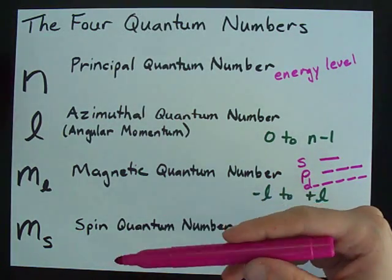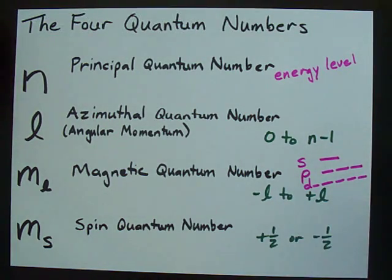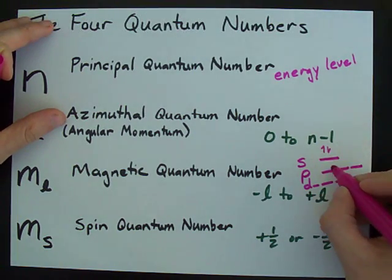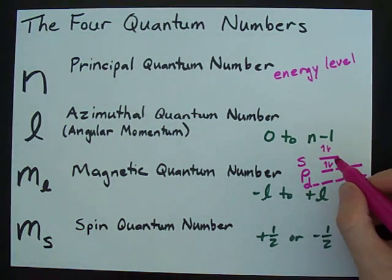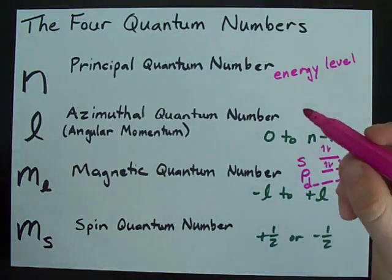There's also something called the spin quantum number, which is either plus a half or minus a half, and that really only represents the fact that you can put two electrons in each of these orbitals in the electron filling diagram.